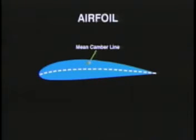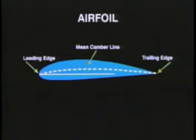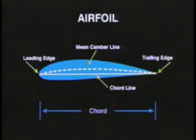The mean camber line is the locus of points equidistant between the upper and lower surfaces of the wing. A line drawn from the leading edge to the trailing edge of the wing is called the cord line, and the length of the cord line is called the cord.